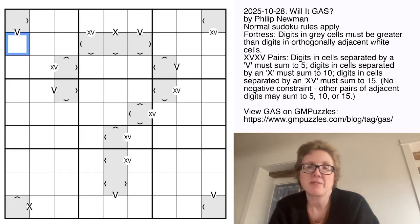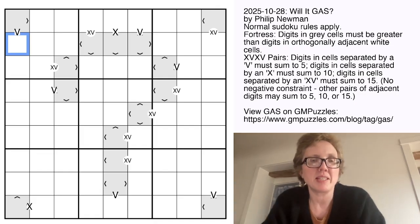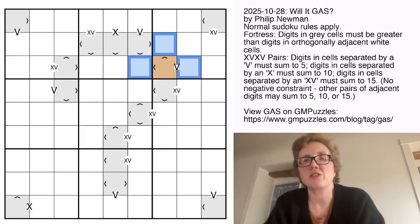And there is no negative constraint in this puzzle, so there might be other pairs in other spots in the grid that have those sums that aren't marked. You only know anything about the cells that have been marked. And then there are also some Fortress cells in the grid. Those are these gray cells, and the rule for these is that a digit in a gray cell has to be greater than all of the digits in orthogonally adjacent white cells.